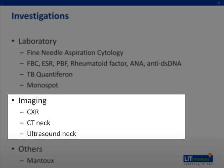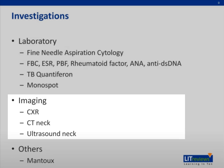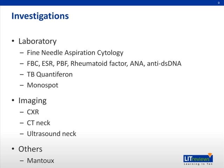A chest X-ray would be useful for patients with respiratory symptoms, those with suspected TB, or even to look for pulmonary metastases in a head and neck malignancy. A CT neck and ultrasound neck are both useful to quantify the number of cervical lymph nodes, as well as to look for a primary that could not be found on physical examination.